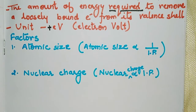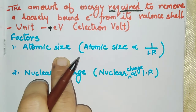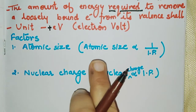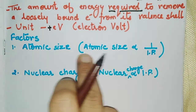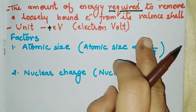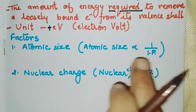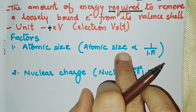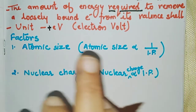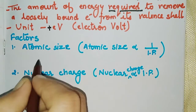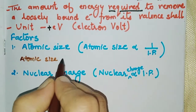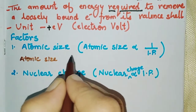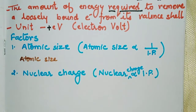Now, the factors: ionization potential depends on atomic size. Atomic size is inversely proportional to ionization potential — remember this. So if atomic size increases, ionization potential decreases. The greater the atomic size, the less the attraction of the nucleus on the last electron.